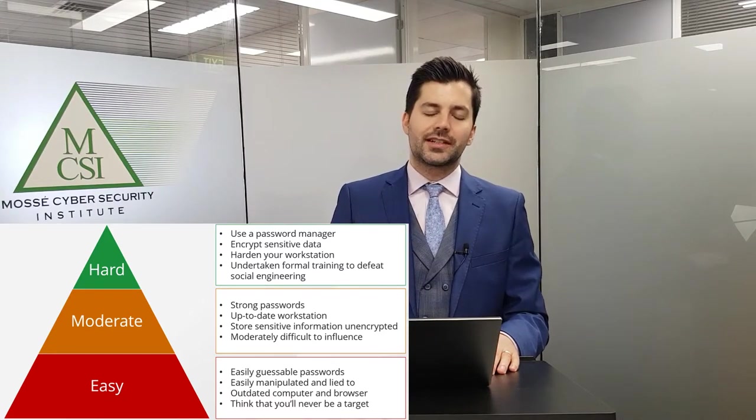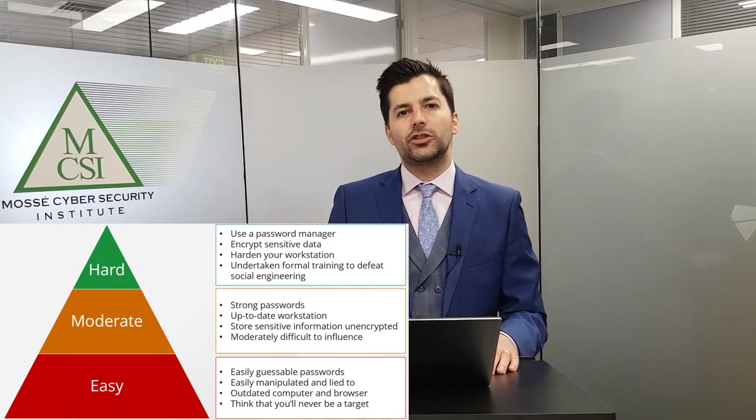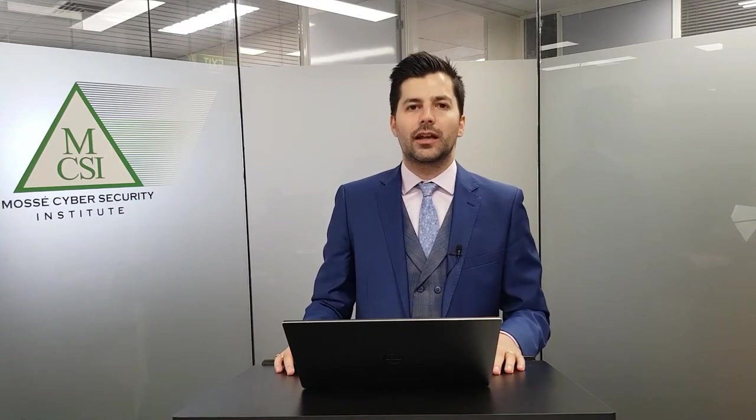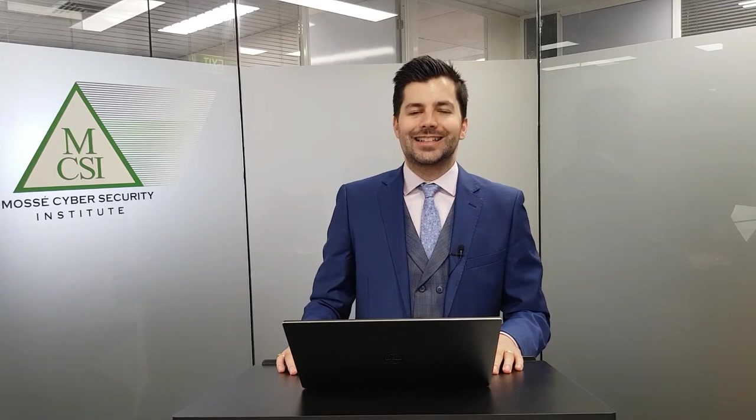Here's what I want you to consider: when you look at this chart, where do you fit in? Are you an easy target, a moderate target, or a hard target? Answer that honestly for yourself. The goal here is for you to take small, incremental steps that are going to help you move up in the Attacker's Pyramid of Pain so that you become a harder target to go after. I hope this model helps you understand how cyber attackers make decisions about who they're going to target, and what you need to do to raise your cyber IQ and become a target that nobody wants to go after. Thank you very much for watching, and see you soon on our channel.